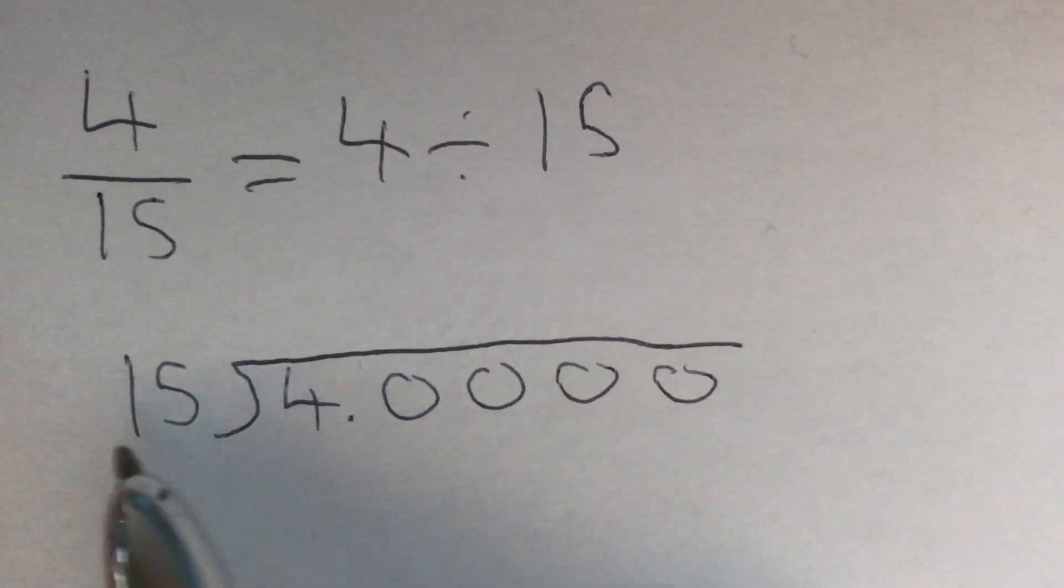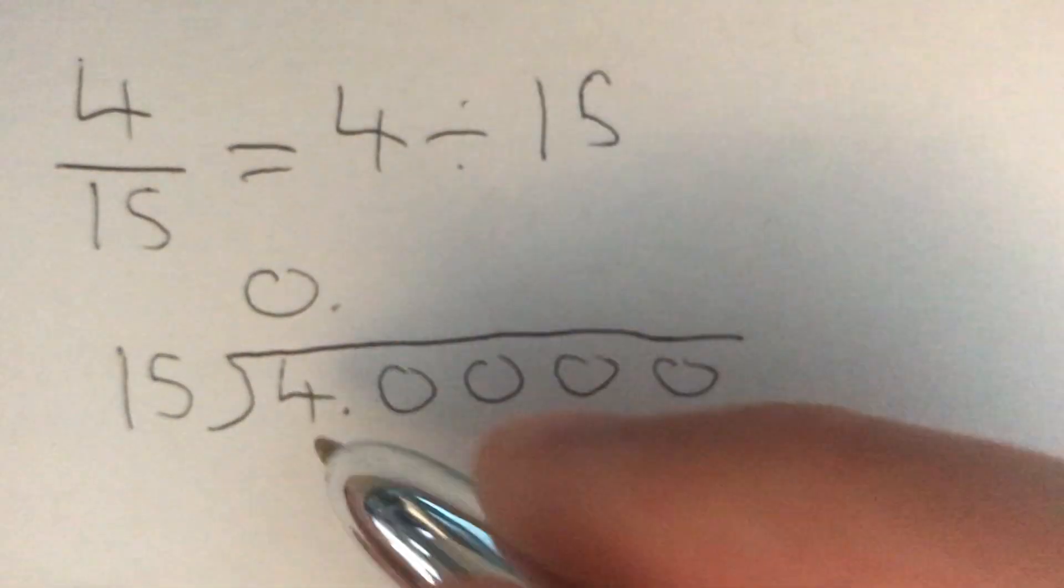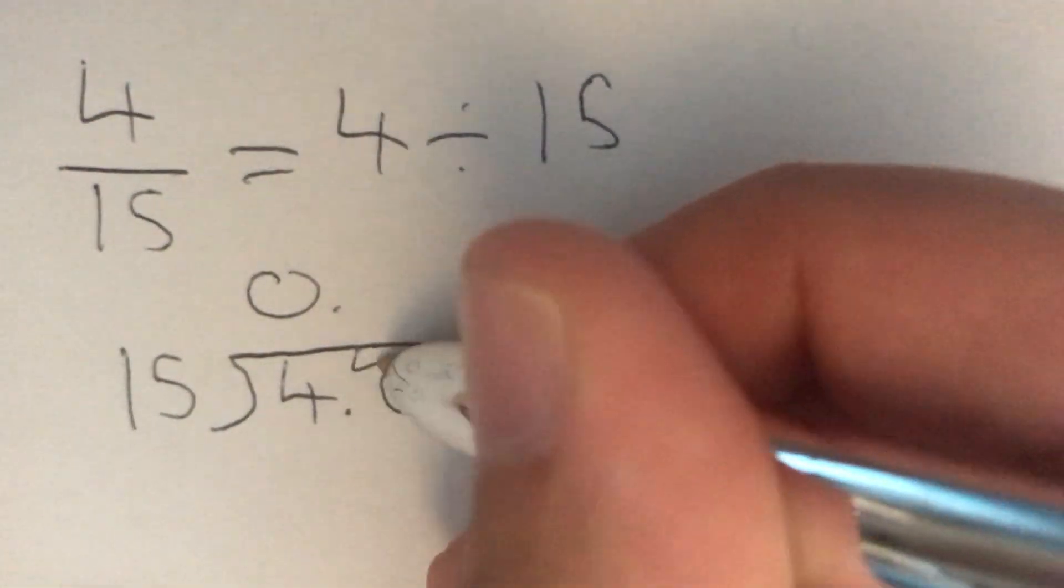So first we need to think about how many 15s go into 4. Well, that's going to be 0. And we carry all of this 4 over into our next column.